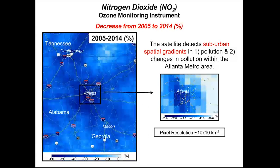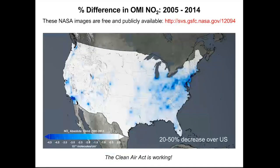Over the last 20–30 years air pollution in the United States has improved quite a bit, especially in the last 10 years. Here we see the change in nitrogen dioxide pollution from 2005 to 2014, and NO2 levels have decreased by as much as 50%. This is largely because of environmental regulations reducing emissions from power plants, automobiles, and factories. The inset of Atlanta shows the satellite detecting suburban spatial gradients in these changes. The largest changes occur on the southwestern side where much of the industry and the major airport are located. Across the whole US, decreases of 20–50% were observed over the last decade. These images are publicly available and free to download. This graphic really shows the Clean Air Act is working.